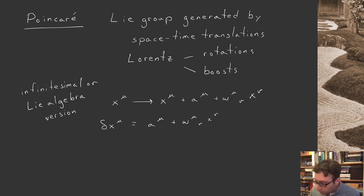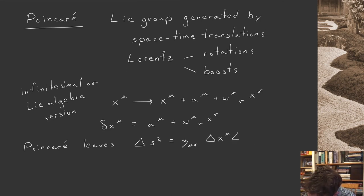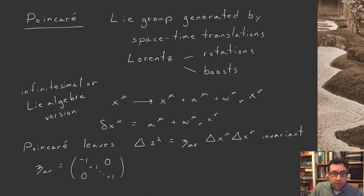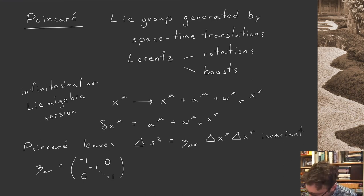There's a more abstract way of characterizing Poincaré: it is the set of elements which leave the following distance invariant — delta s squared equals eta_{μν} delta x^μ delta x^ν. That's what Poincaré really is, where eta_{μν} is the Minkowski tensor in mostly-plus signature, which we'll work in throughout this class.